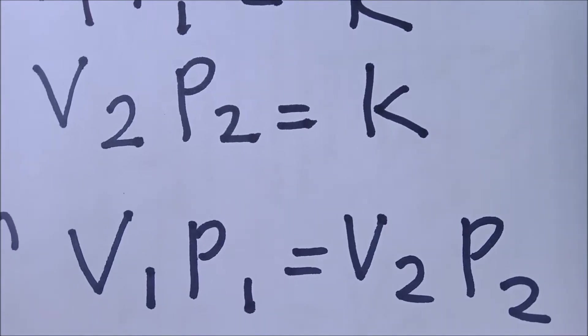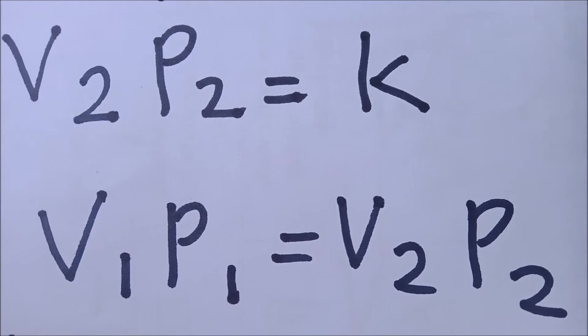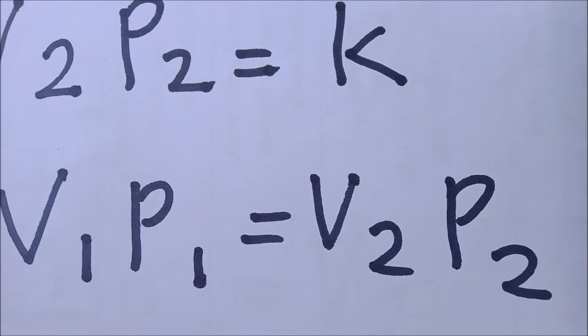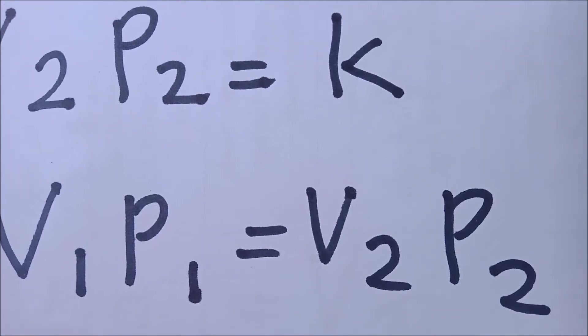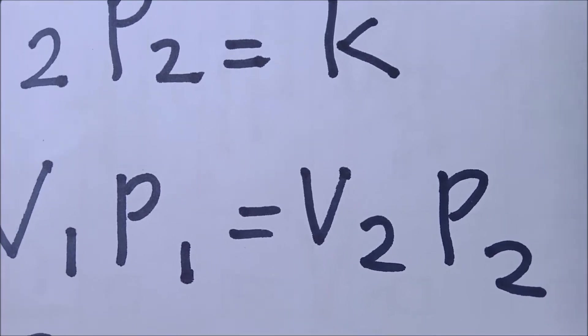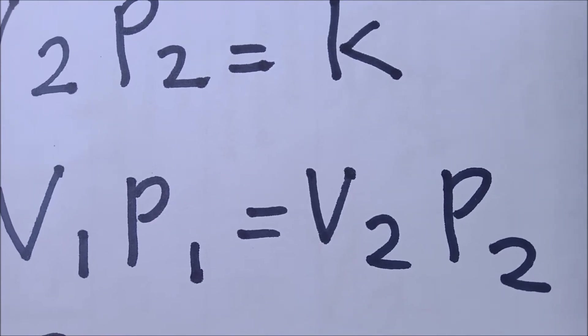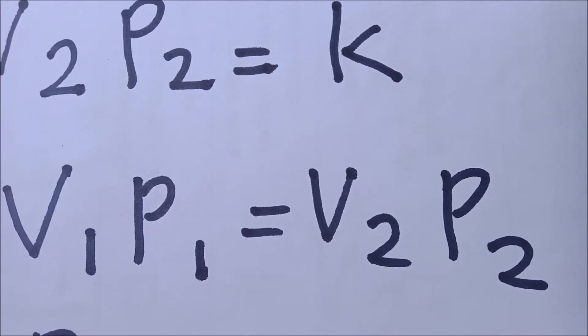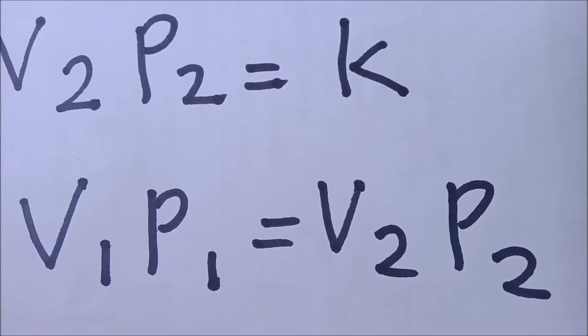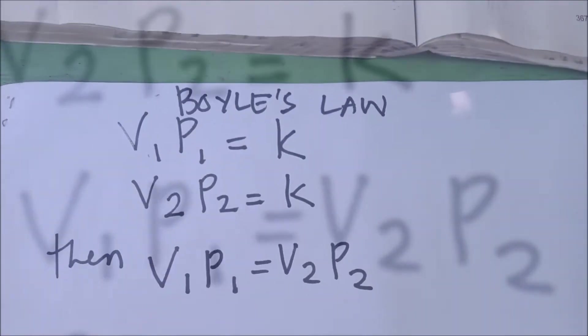V1 here is actually the initial volume of the gas at initial pressure, P1. While V2 is the final volume as there could have been or there could be changes in pressure, P2. This formula actually tells us that there will be changes in the volume once there is also a change in the pressure of a certain gas.